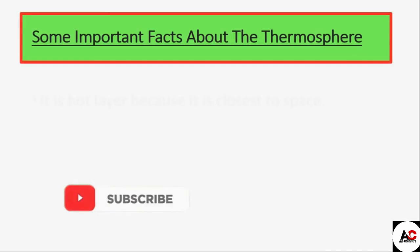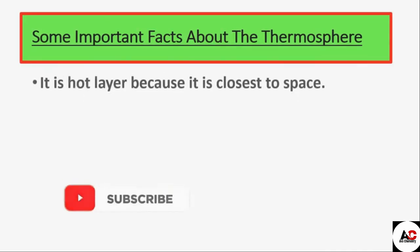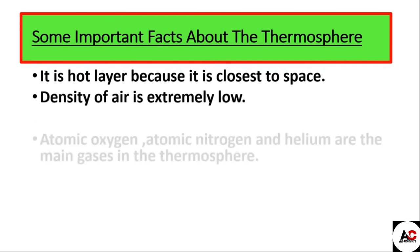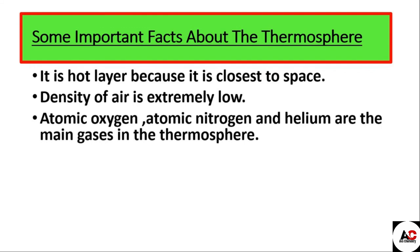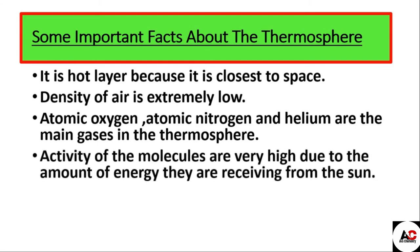Some important facts about the thermosphere: it is the hot layer because it is closest to space, and the density of air is extremely low. Atomic oxygen, atomic nitrogen, and helium are the main gases in the thermosphere. Due to the very high temperature, oxygen and nitrogen exist in their atomic form rather than molecular form. The activity of molecules is very high due to the large amount of energy they receive from the sun, and most molecules convert into their atomic state.